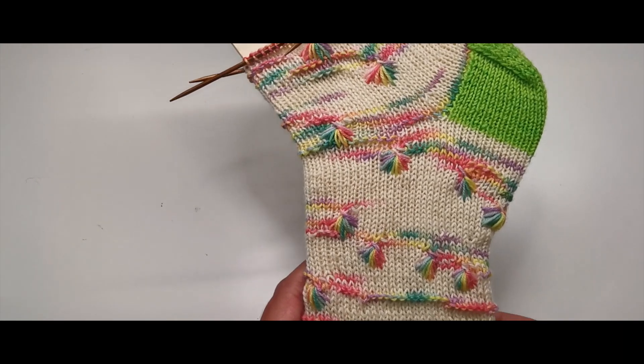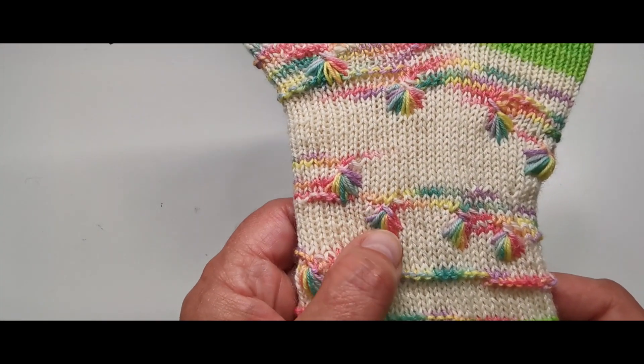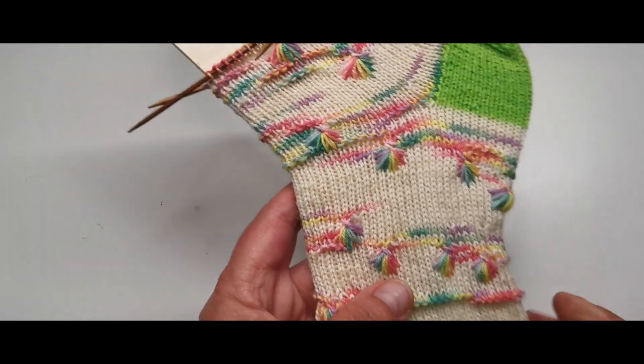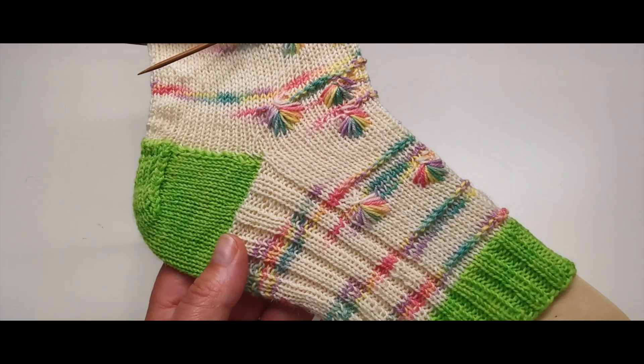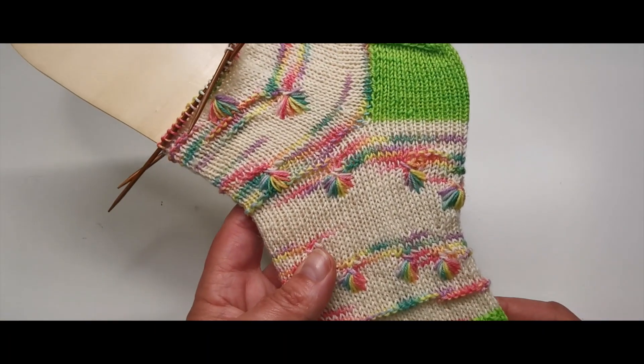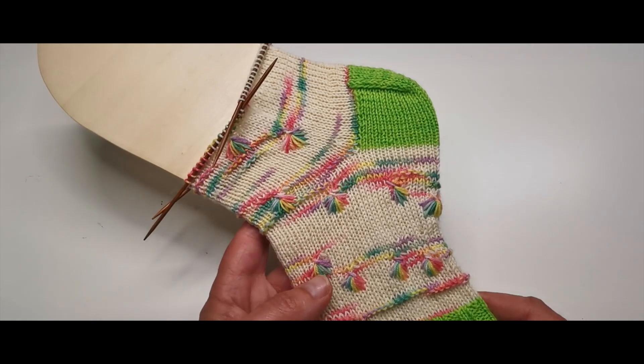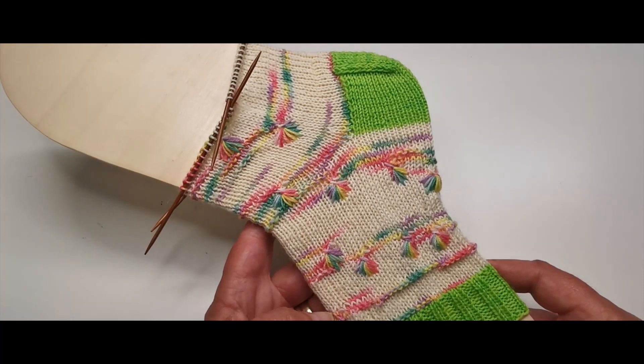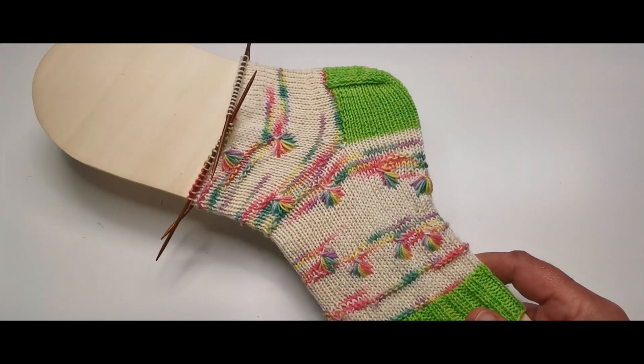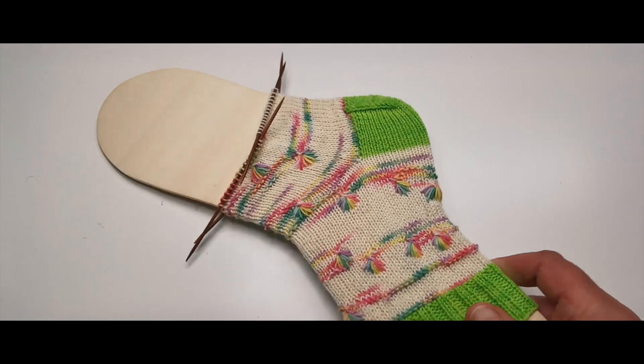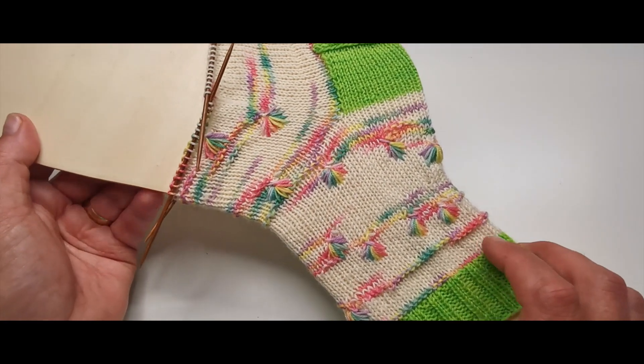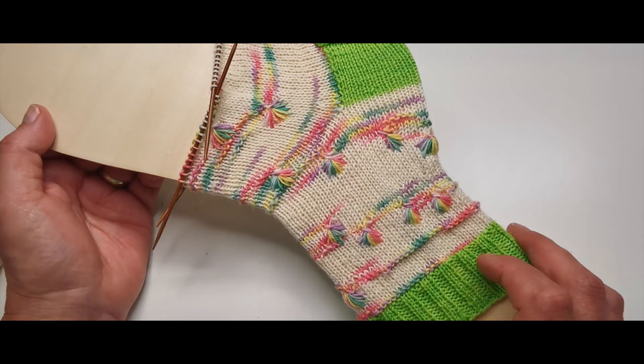Das ist also meine Socke. Mein Stil, ich nenne das jetzt mal mein Stil, dieses Pooling ohne Löcher zu stricken. Da habe ich ein bisschen dran rumgetüftelt. Und wenn du jetzt denkst, dass das eine Sockenanleitung ist, wo jede Reihe genau erklärt wird, dann muss ich dir jetzt schon sagen, das geht nicht, weil du strickst wahrscheinlich anders als ich, lockerer oder fester.